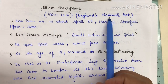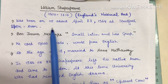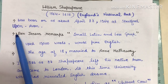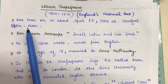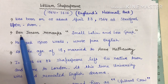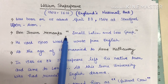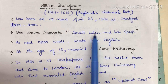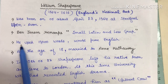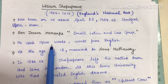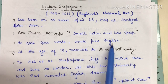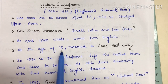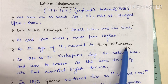He was called England's national poet. He was born on April 23, 1564 at Stratford-upon-Avon, and Avon is a river. Ben Johnson remarked about Shakespeare that he knew more Latin and less Greek. He used around 15,000 words and wrote purely in English.